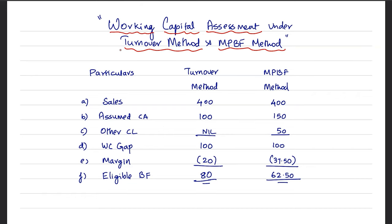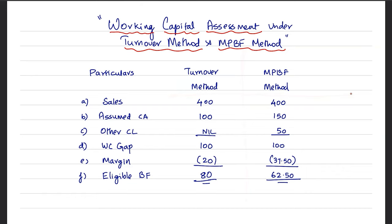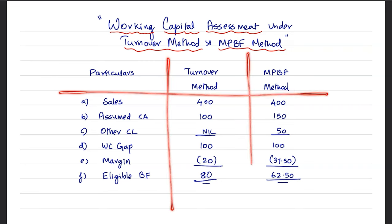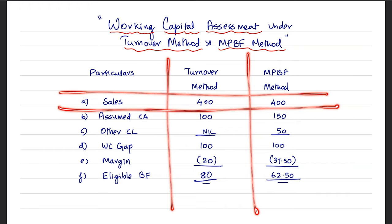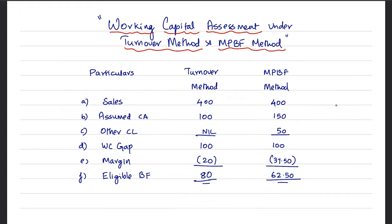If you are going to do a comparison between the Turnover Method and the MPBF Method, what kind of impact will it have? Let's take a scenario where a unit is reporting a turnover of 400 — you can view this as 400 lakhs or 400 million. If you are going to do assessment under these two methods, let's see how it works.